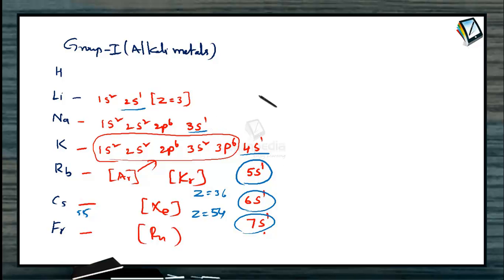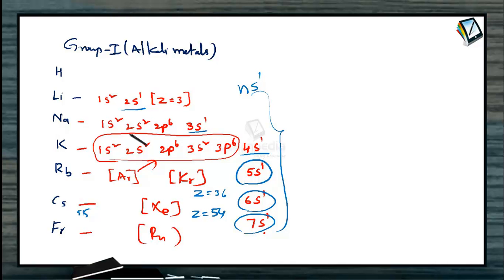From this, we can conclude that the outermost electronic configuration of all Group 1 elements is ns1: lithium 2s1, sodium 3s1, potassium 4s1, rubidium 5s1, cesium 6s1, and francium 7s1.